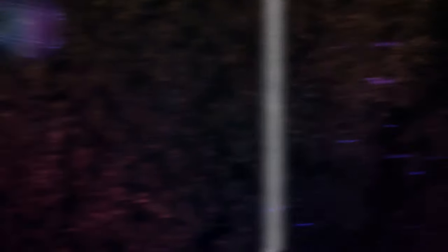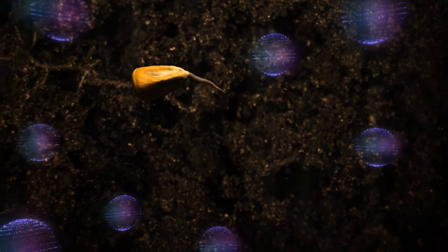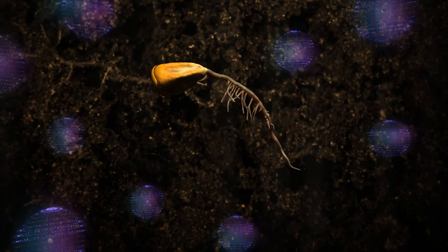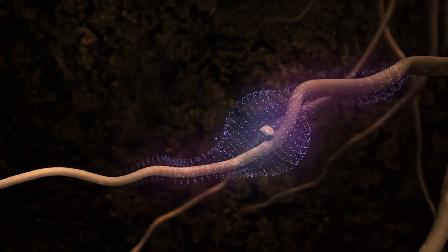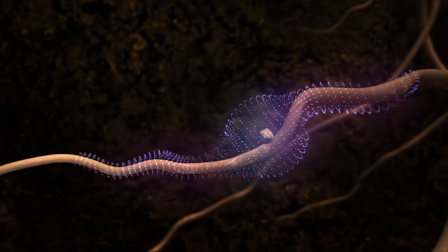But because each MicroEssentials granule is nutritionally balanced, uniform distribution is easily achieved. Plant roots have more sites to reach the key nutrients needed for optimal growth.